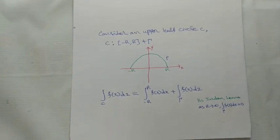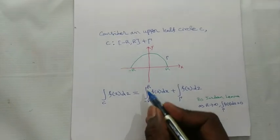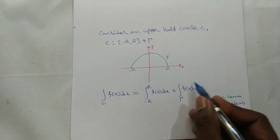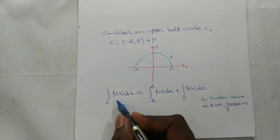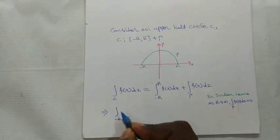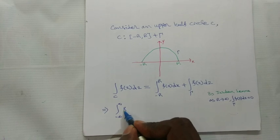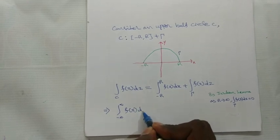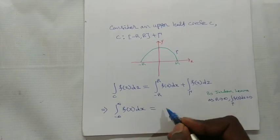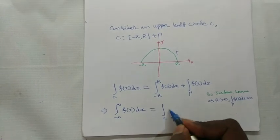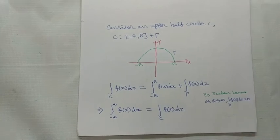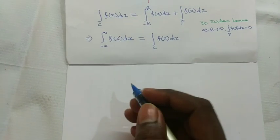Substituting, as R tends to infinity, the gamma integral becomes 0, so the integral from −∞ to +∞ of f(x) dx equals the integral over C of f(z) dz.